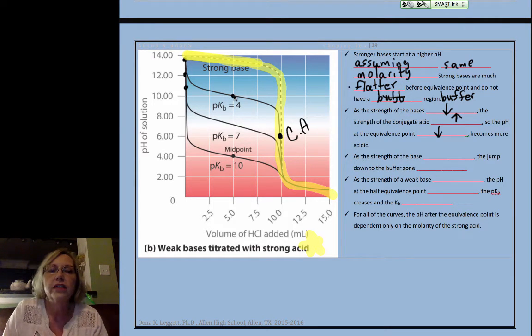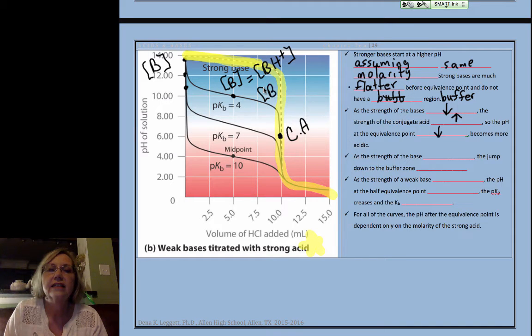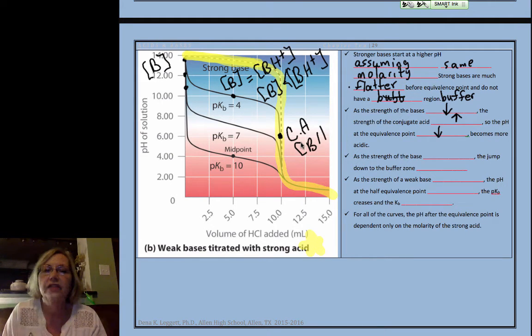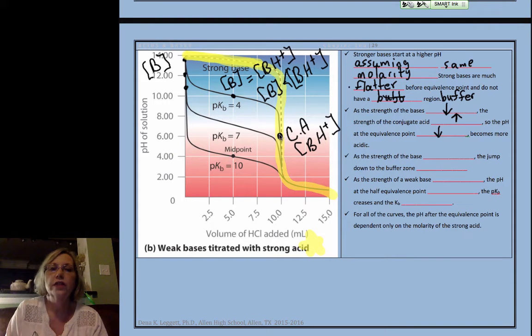Prior to the equivalence point, let's do what we did earlier. So, there's the half equivalence point. Here, if I've got a base, the unprotonated form is the only thing present. At the half equivalence point, the unprotonated is equal to the protonated form. In between, we get this. At the equivalence point, all we have is the weak conjugate acid. This is for the weak ones now, not the strong ones anymore.